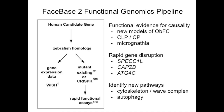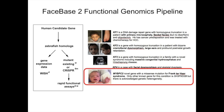SPEC1L came from the first case where a genetic basis for Tessier C8 oblique facial cleft was established. CAPZB is from a patient with cleft palate, hypotonia, and a retrusive lower jaw — almost like Robin sequence — successfully modeled in zebrafish. ATG4C is from a patient with cleft palate, and we've established that many genes in the autophagy pathway may intersect with craniofacial dysmorphogenesis.